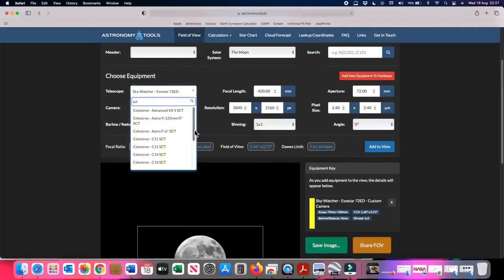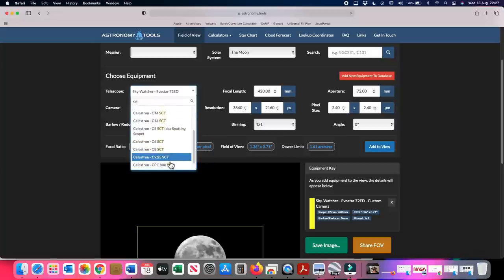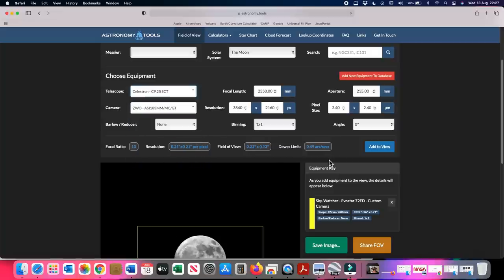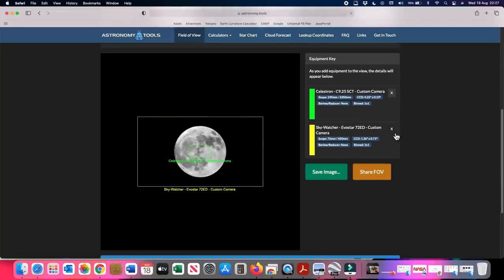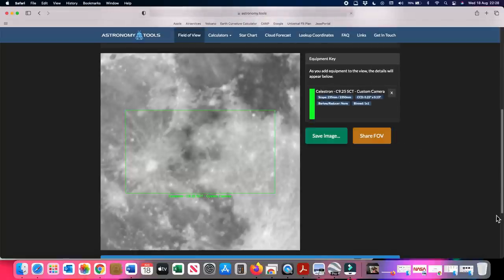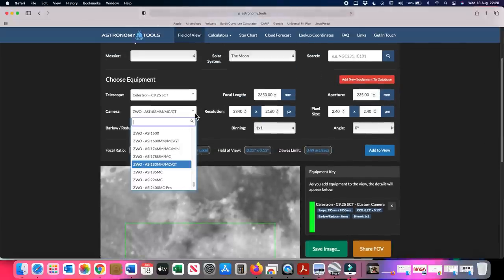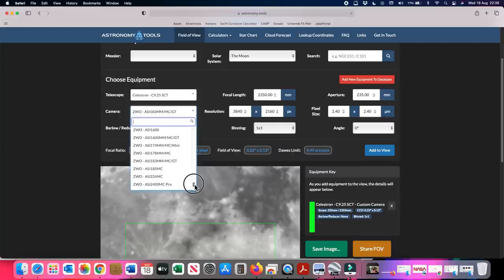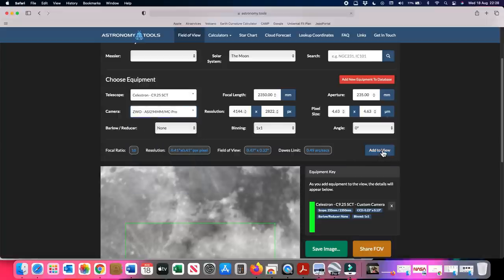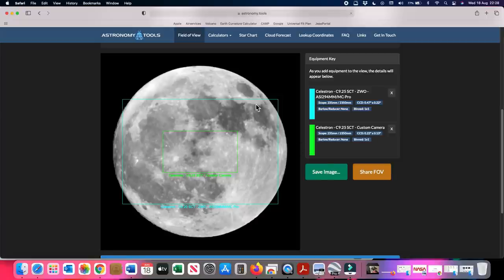I have now selected the Celestron 9.25 SCT which is my big telescope at home with the same camera. You're going to see that, so obviously you cannot see all of the moon now. You can actually get a camera that will give you a wider field of view. The ZWO 294 is a great camera and I have that one as well. That's going to give you this type of image. Again that may not be what you're looking for.